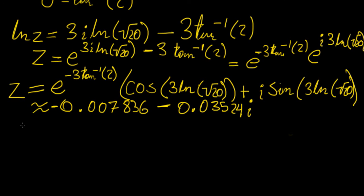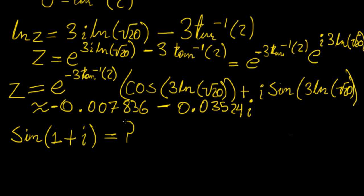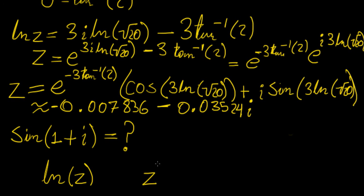Of course, this technique won't always work. For example, sine(1 + i) — we cannot really invert this because transforming to polar form won't help. To handle that, we need to define the sine function in terms of a complex variable, which we'll do in a few videos when we introduce functions of a complex variable. But for now, if you have an expression like ln(z) or z^ω where ω is another complex number, you know how to evaluate it using this method.